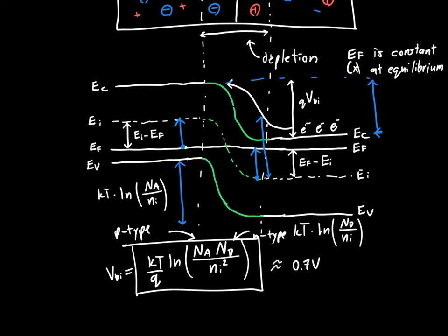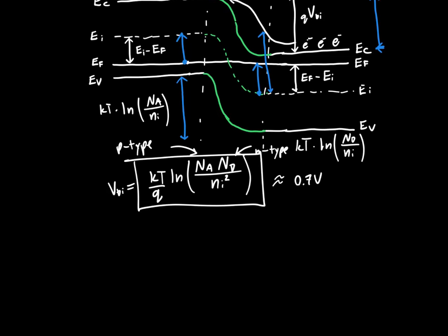So now that we know the built-in potential between the two sides, we're going to be able to work backwards to find the electric field within the depletion region and to find the size of the depletion region. And so that's what we're going to cover in the next video.